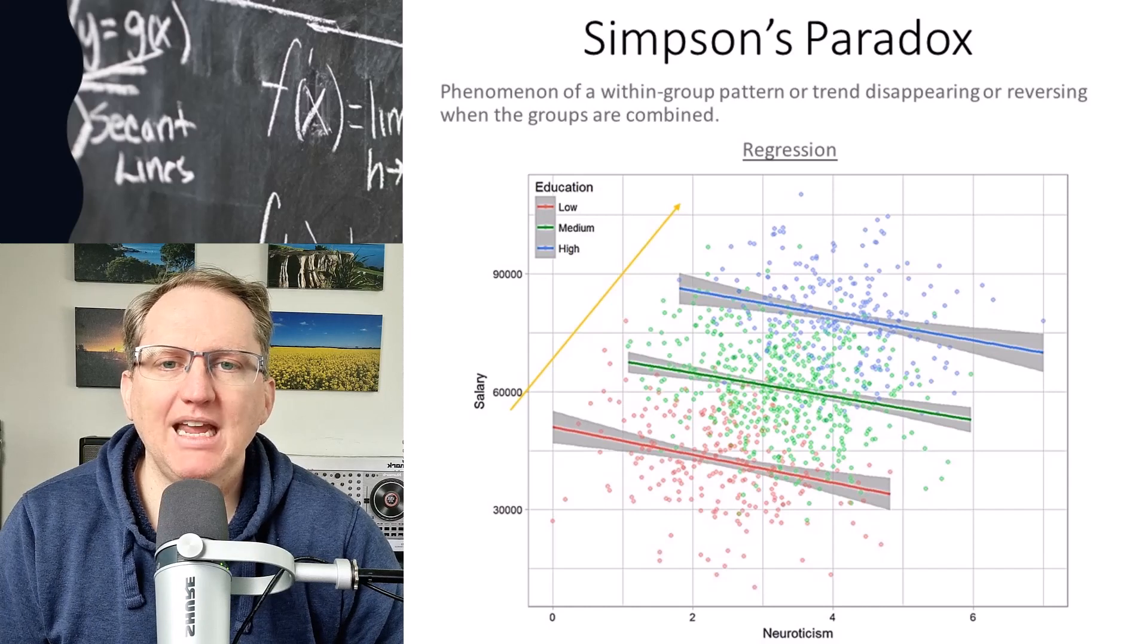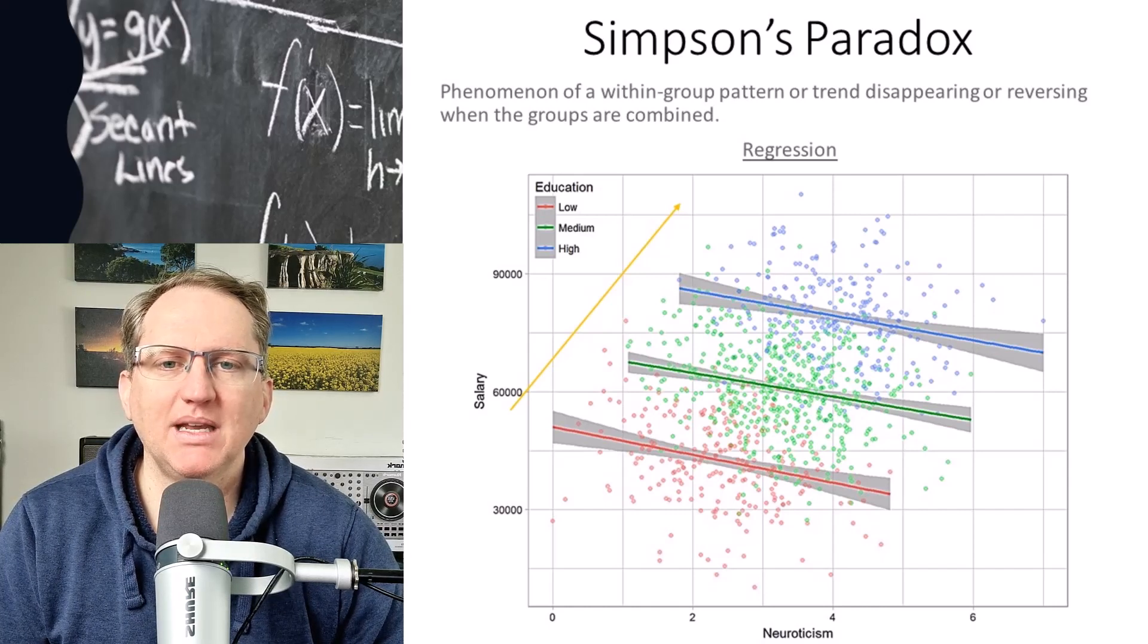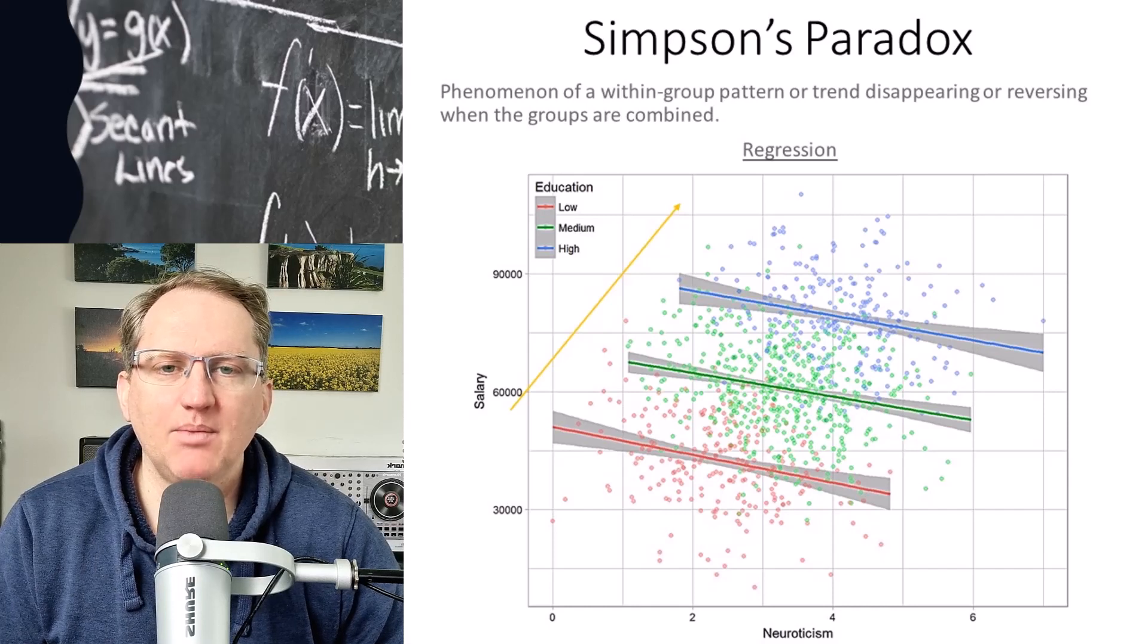We have two main areas that this comes up in. One is regression, the other is means and medians. And I have a visual example here of each.